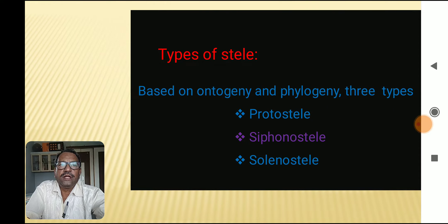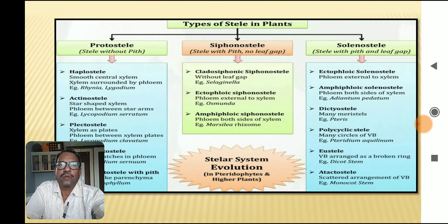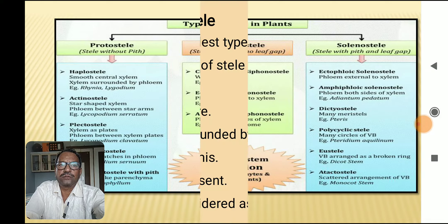There are three types of steles on the basis of ontogeny and phylogeny. They are protostele, siphonostele, and solenostele. This table shows the types of steles — protostele, siphonostele, and solenostele — each having several subtypes, which are shown in the diagram.